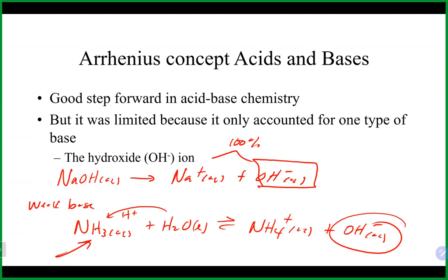Ammonia is a much weaker base than sodium hydroxide. Sodium hydroxide just needs to go for a swim — it breaks apart immediately. Ammonia has to go find some water and do a little reaction. It's still able to produce some hydroxide, but nowhere near what sodium hydroxide produces. That's why it's a weak base, shown with reversible arrows indicating it's a weak electrolyte.